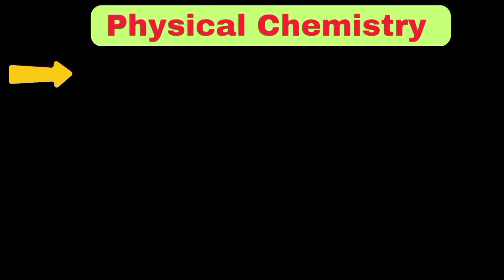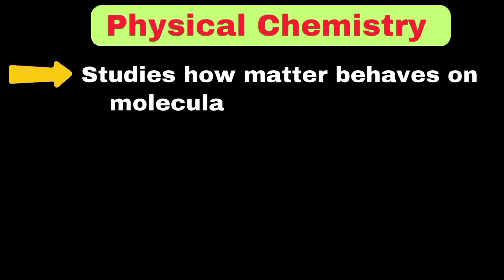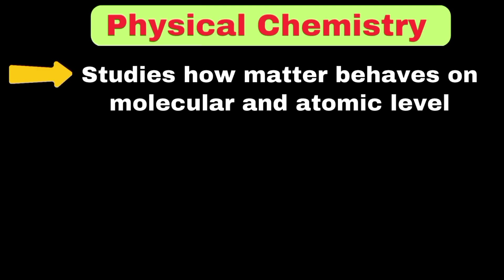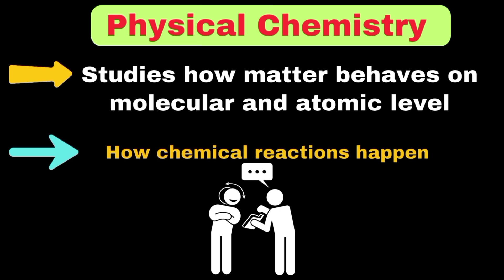Physical chemistry is the branch of chemistry that studies how matter behaves on a molecular and atomic level and how chemical reactions happen. To understand it deeply, first we need to learn thermodynamics in detail.